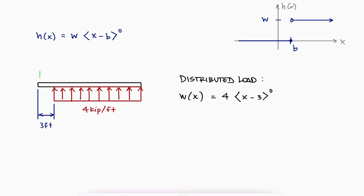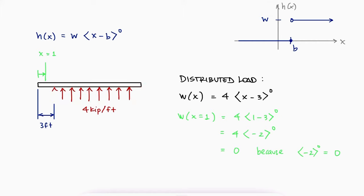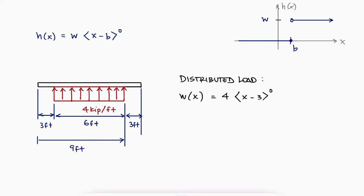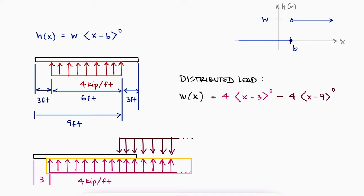Notice that the distributed load for x equal to 1 is zero, since x minus 3 equals minus 2 within the brackets, and for anything negative within the brackets the function is zero. Now if the distributed load is only applied between foot 3 and foot 9, and the beam is 12 feet long, we can add two step functions together. The first has a positive 4 magnitude beginning at x equal to 3, and the second has a minus 4 magnitude beginning at x equal to 9 feet. Graphically, the positive and negative functions result in the given load, and the distributed loads cancel each other out past 9 feet.